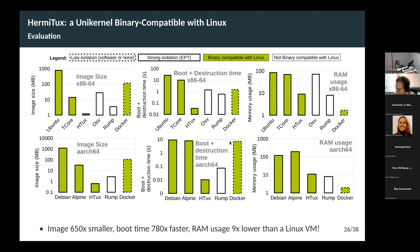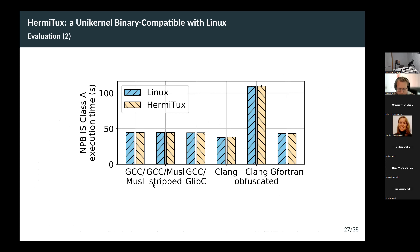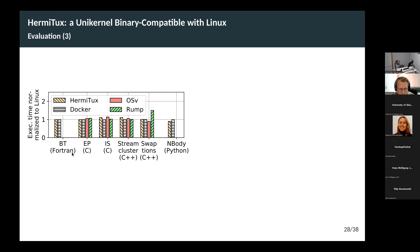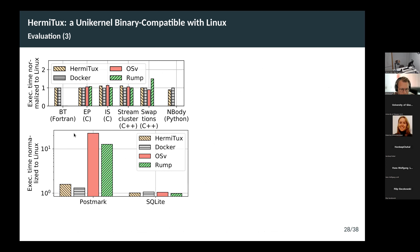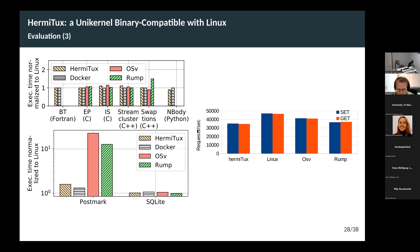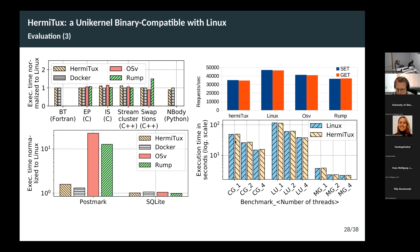Some performance numbers: we have a very small disk footprint, we boot very fast compared to competitors and traditional virtual machines — keep in mind these are log scales. We have a relatively small memory footprint. This is for x86 and ARM64. We tried different types of binaries with different compilers, enabled some applications, looked at different programming languages including Fortran, C, C++, and Python. We also looked at storage-intensive applications, networking applications like Redis, and we do support multi-threading with OpenMP apps.